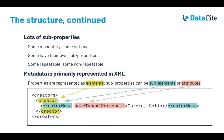The Datasite Metadata Schema is primarily represented in XML format. When we translate this property and subproperty structure to XML, properties are represented as elements. Subproperties can be either subelements, which are nested within an element, or attributes attached to an element. In this example, we have a creator property, which is an element. It has a subelement, creator name, and then the creator name has an attribute for the name type.